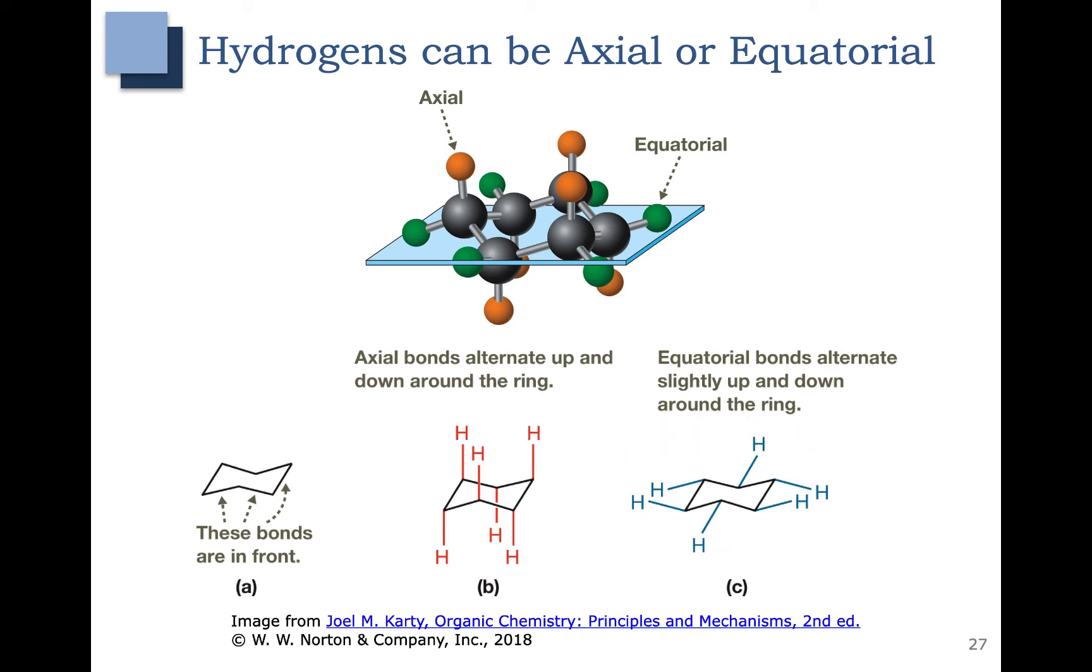Also as you're looking at this picture, recognize that this is a side-on view of cyclohexane in the drawing of the chair conformation shown here. You can see those bonds 1, 2, and 3, the ones that are in the front or sticking out at you.